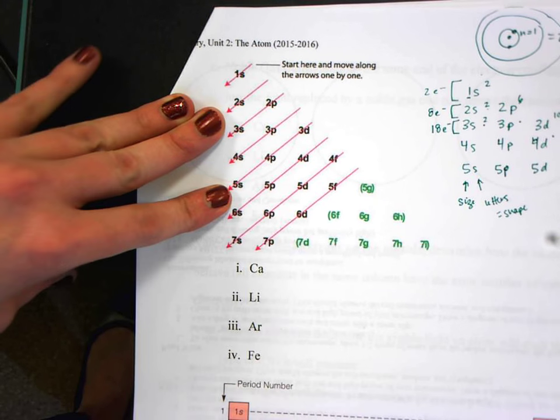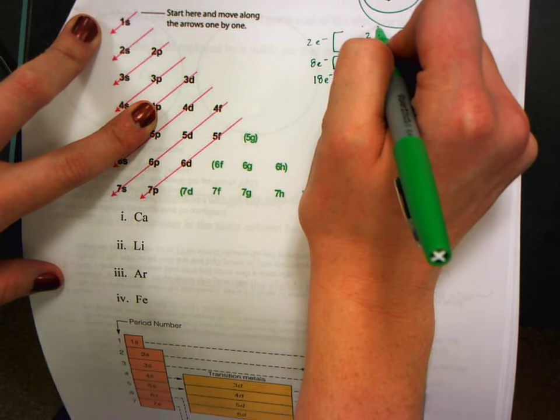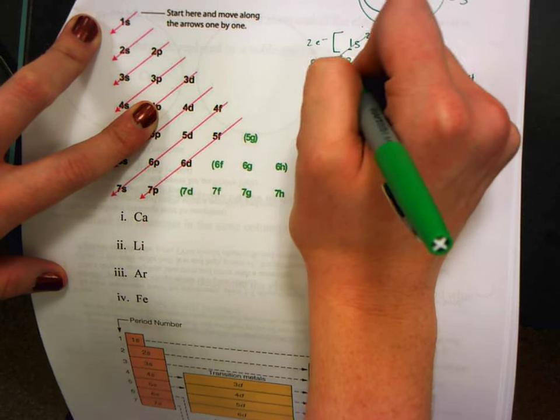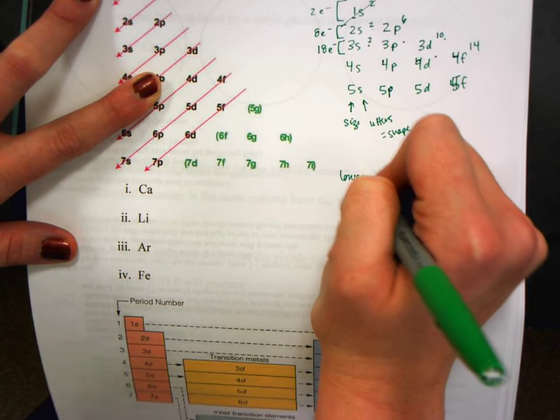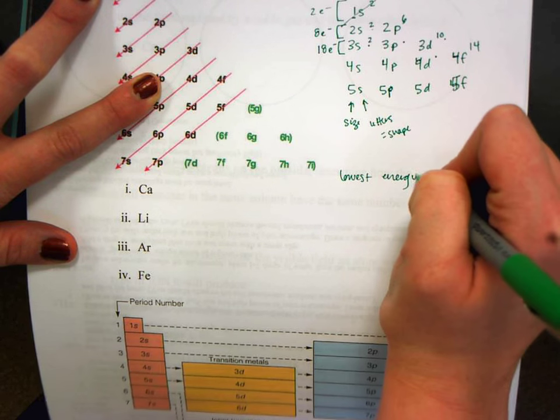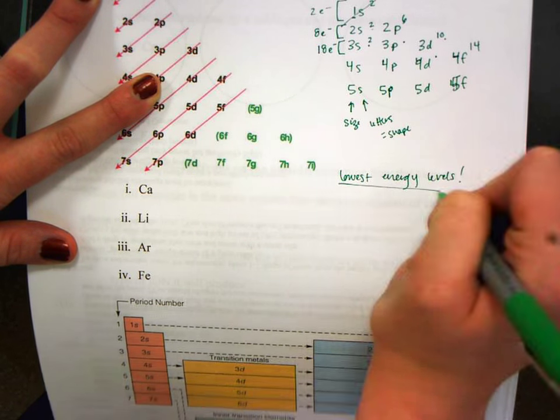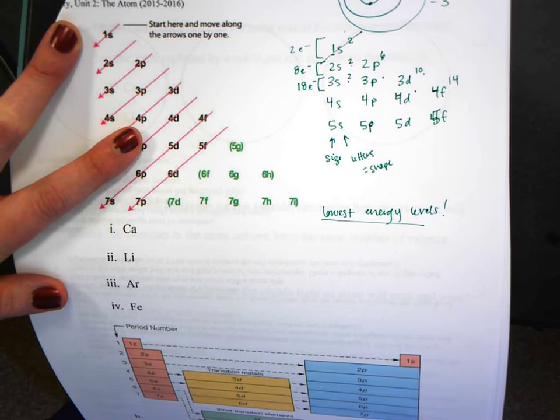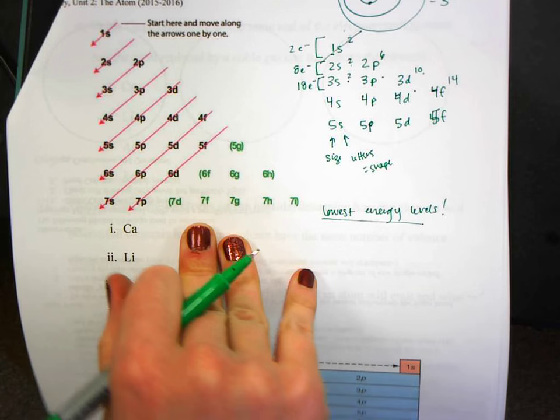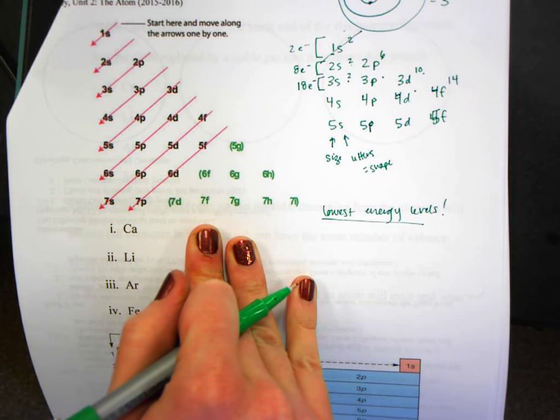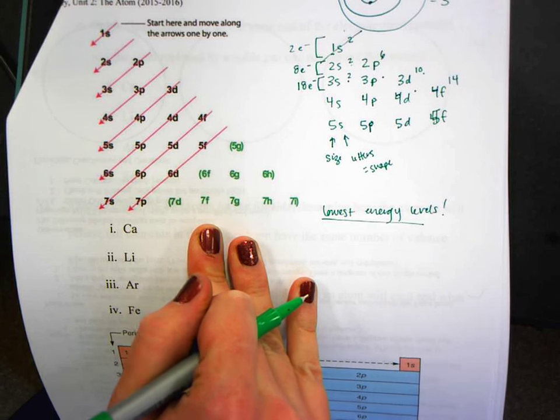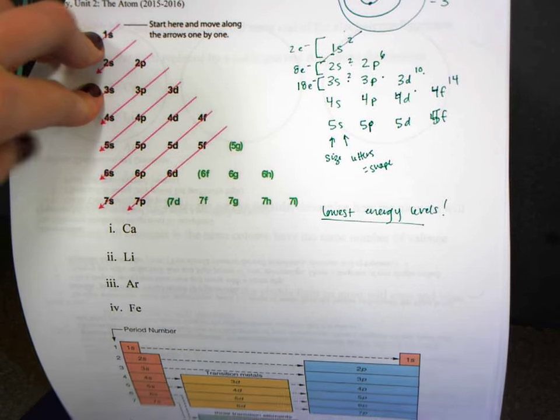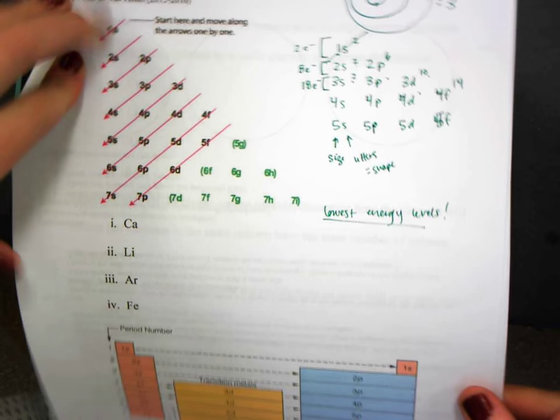So we're going to talk about why there are these diagonal lines through this chart. Well, if you do something called the diagonal rule, we can start to figure out where those electrons are placed based on lowest energy levels. So remember that electrons want to be as close to the nucleus as possible. And so by doing this electron configuration rule, we actually are able to figure out where I can place those electrons to make sure they're as close to the nucleus as possible. So you start off by just going through. And I think the best way to model this for you guys is to actually do one.